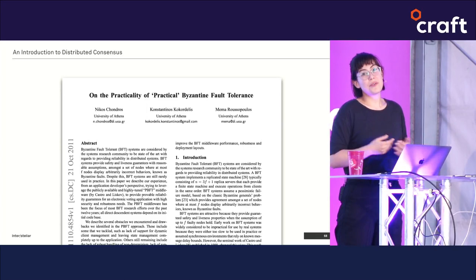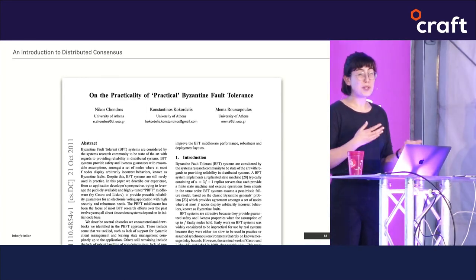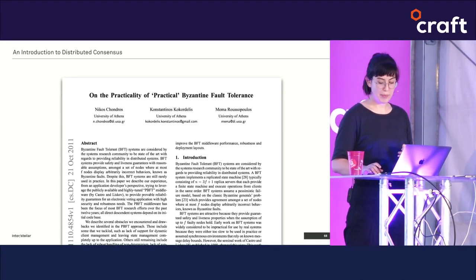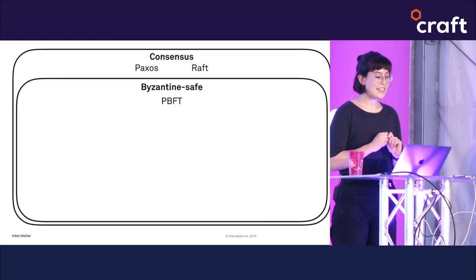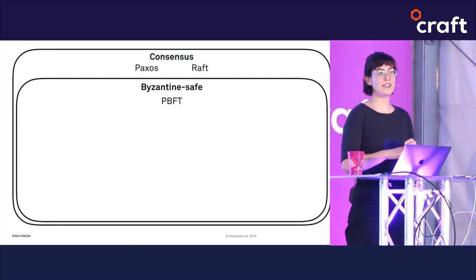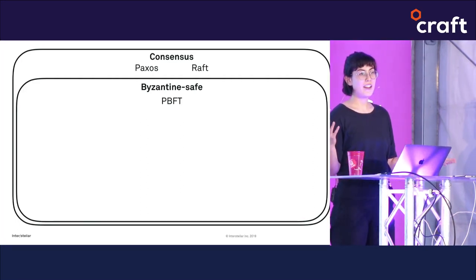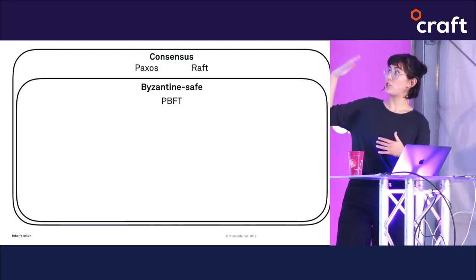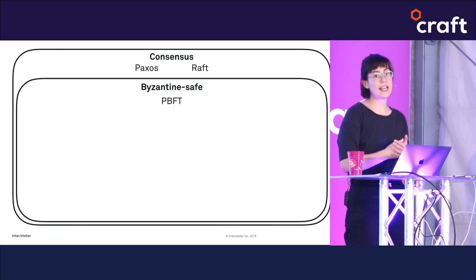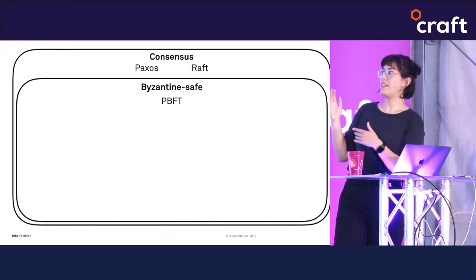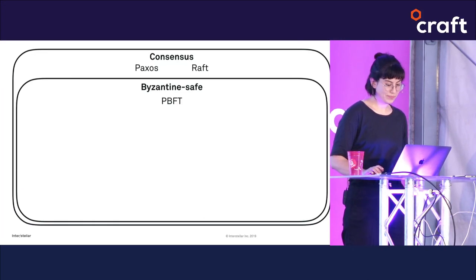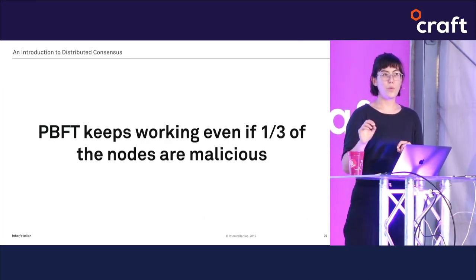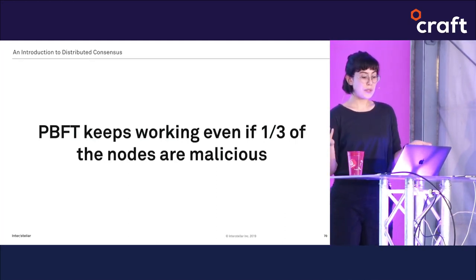Nonetheless, PBFT is an important algorithm in our consensus constellation. It both solves the consensus problem and can handle Byzantine faults, so we'll put it in a new Byzantine-safe box. PBFT keeps working as long as fewer than one third of the nodes are misbehaving. This sounds pretty good until you realize we have another problem: what stops an attacker from spinning up a bunch of new malicious nodes? This is called a Sybil attack.